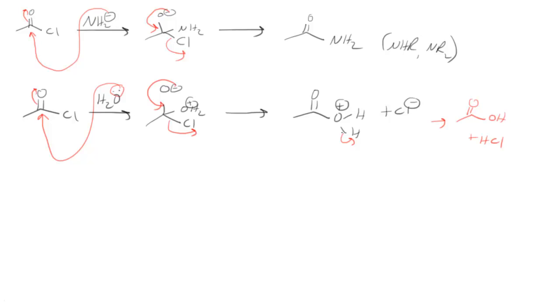So instead, what we need is we need something else to come in and pull that proton off. So what typically is used is pyridine. And pyridine is a pretty decent base. And that can come in there. And then when the pyridine grabs the proton, this electron pair goes back onto oxygen. And now we have our carboxylic acid.